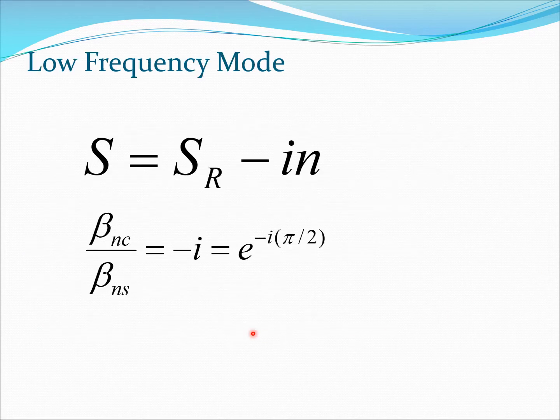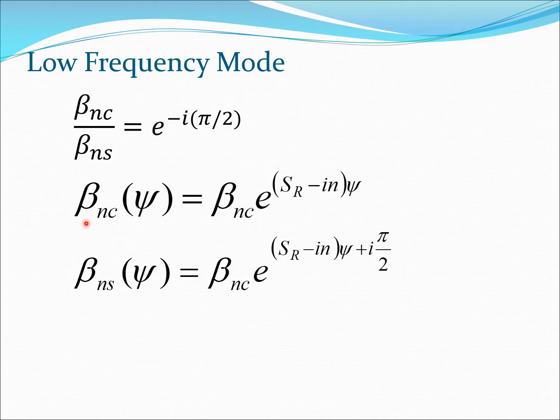Now let's turn to the second side which is more complicated, and that's the low frequency mode. For the low frequency mode, the non-rotating value is related to the rotating value using this equation. So S is SR minus IN. Essentially we can now write the eigenvector corresponding to this mode as beta NC by beta NS is minus i. We can write it as e to the power minus i pi by 2.